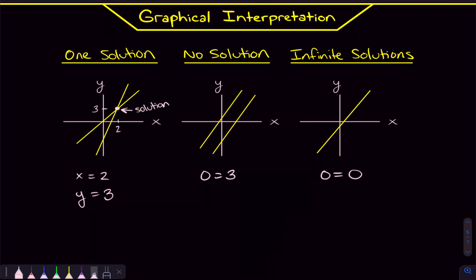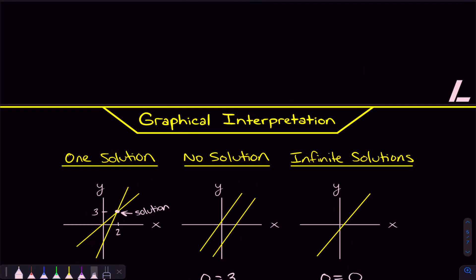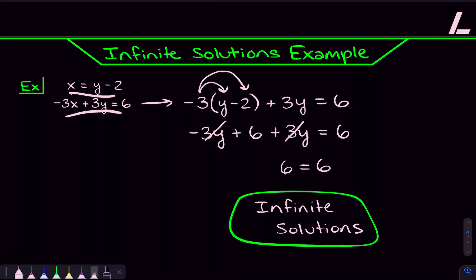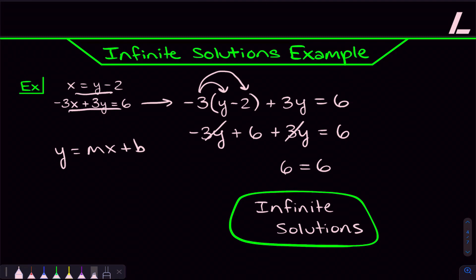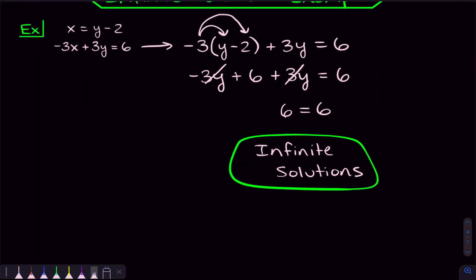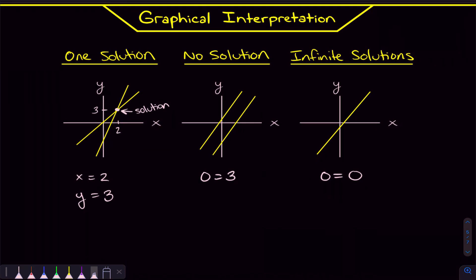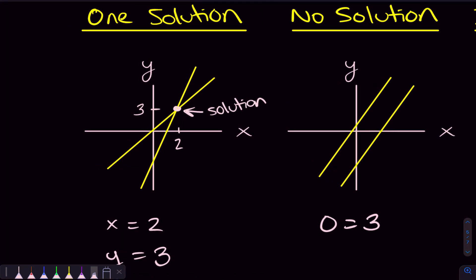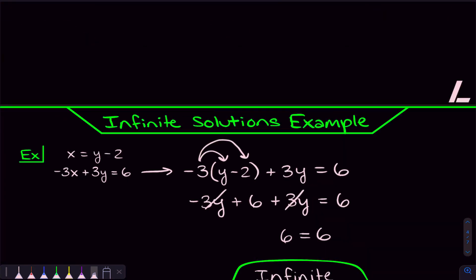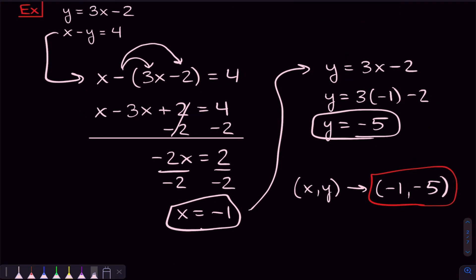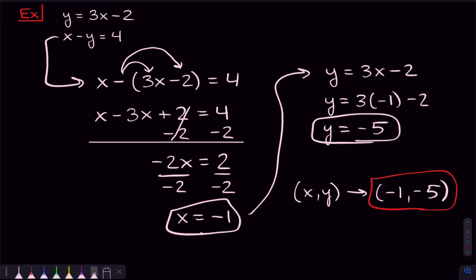Now that we've talked about three examples, let's talk about what all of this means graphically. Whenever we solve a system of linear equations, these two things are lines — you can solve for Y in both of them and get each into Y equals MX plus B form. When we graph them, if they intersect, where they intersect is the solution. In the first example, the XY pair we found — negative 1, negative 5 — is where those two lines intersect.